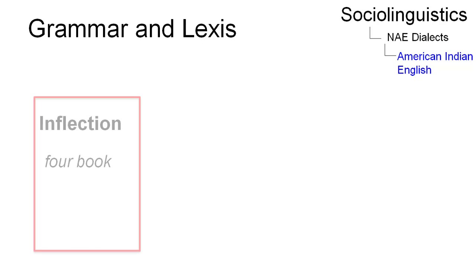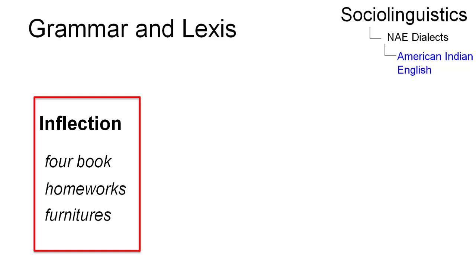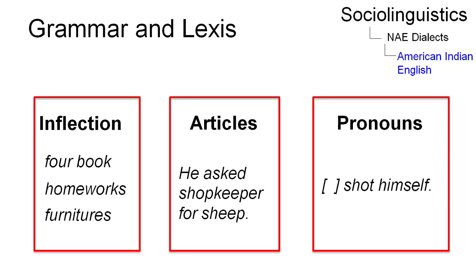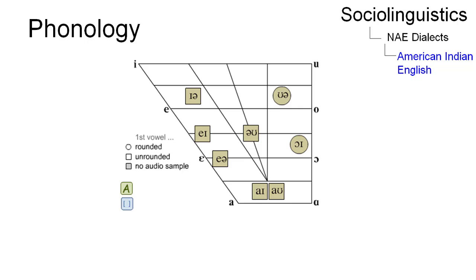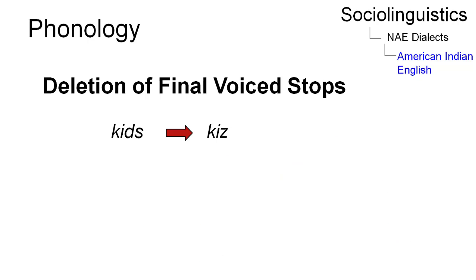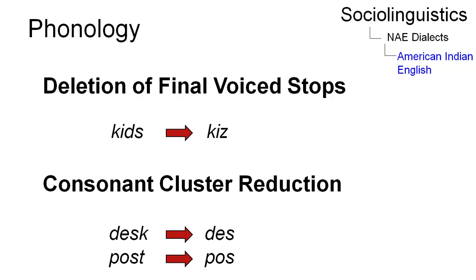The plural morpheme is often deleted or replaced, and mass nouns can be pluralized. American Indian English may drop articles, and the subject pronoun can often be deleted. Among the distinctive sound patterns, we find the central diphthong I, whose onset is raised to a more central position, the final devoicing of consonants, the deletion of final voiced stops, and consonant cluster reduction.